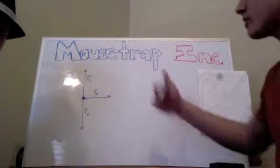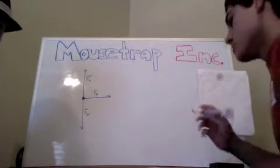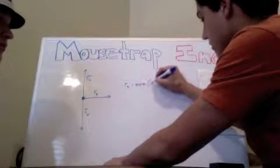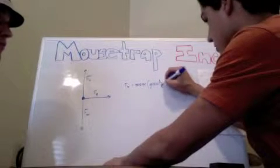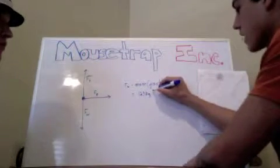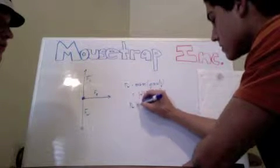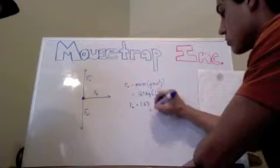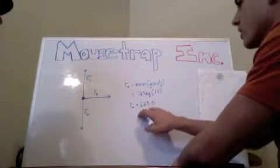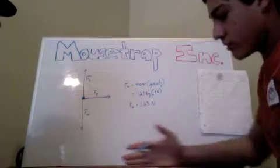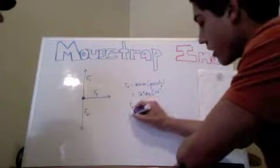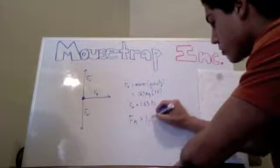Now we're going to look at how to calculate each of the different forces on the free body diagram. We'll start with Fw, which is gravity. The equation is Fw equals mass times gravity, where gravity is a constant of 10. We calculated the mass to be 0.123 kilograms times 10, so Fw equals 1.23 newtons. Because the car is rolling on a level plane and not moving up and down, Fn and Fw are equal, so Fn is also 1.23 newtons.